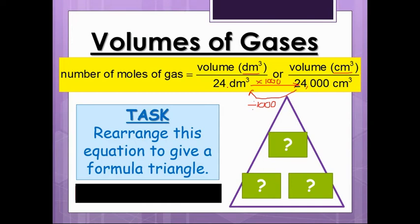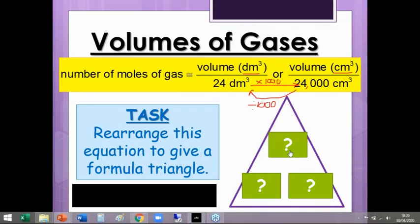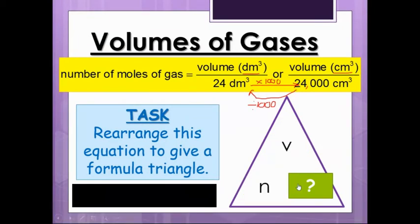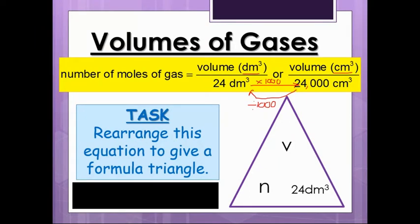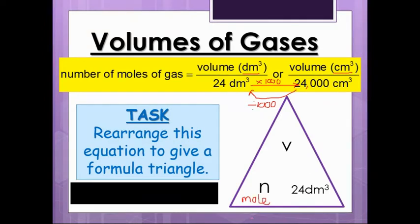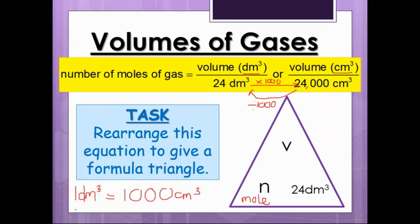So if we were to arrange this as a formula triangle, what would it be? Yeah, some answers coming in. Someone suggested V for volume at the top, moles and 24 at the bottom. N is just the short way of saying moles, which I'll explain what moles means in a second. If you put M, that usually means mass. So they use N to represent moles. So please do just remember that one decimetre cubed is a thousand centimetre cubed. And from a linguistic point of view, centi means a hundred, deci means ten. So the centi should always be bigger than the deci.